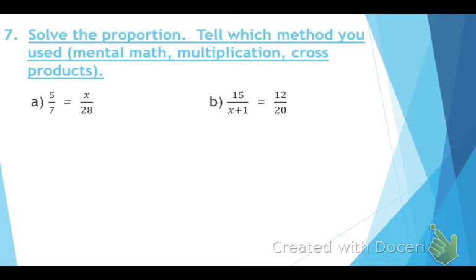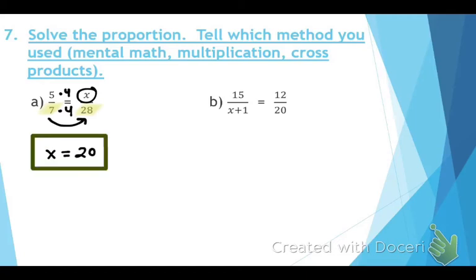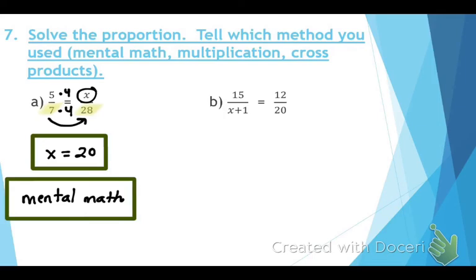For the next problem, solve the proportion using mental math. We know both the numerator and denominator on the left side: 5 over 7. Going from something smaller to something bigger, we multiply. The missing link is times 4: 7 times 4 equals 28, and 5 times 4 equals 20, so x equals 20. Write 'mental math' as the method used.